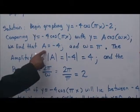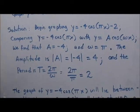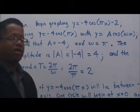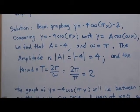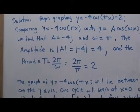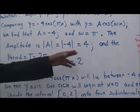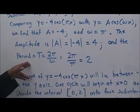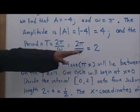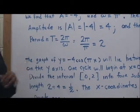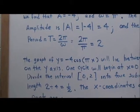We find that a equals negative 4 and omega equals pi. The amplitude is the absolute value of a, which is the absolute value of negative 4, equal to 4. The period t equals 2 pi divided by omega, which is 2 pi divided by pi, giving a period of 2.